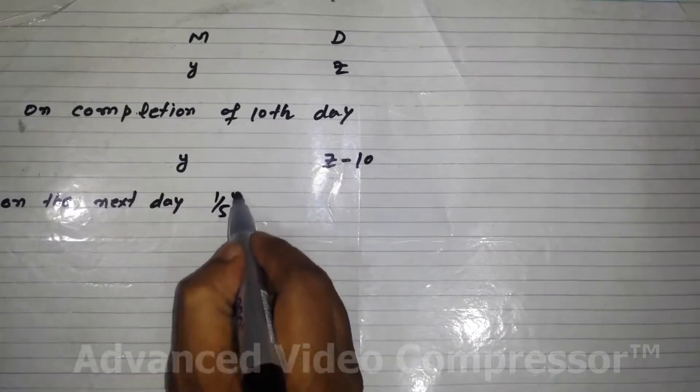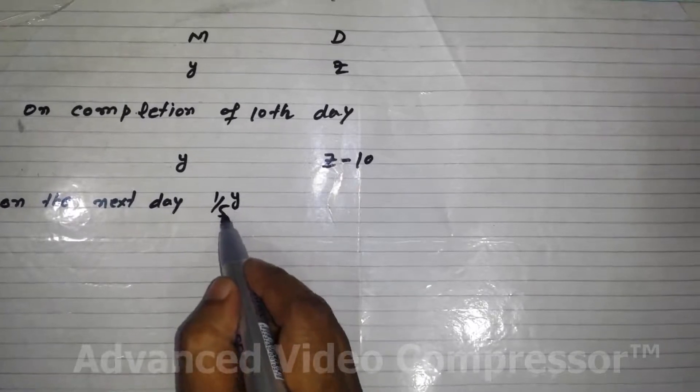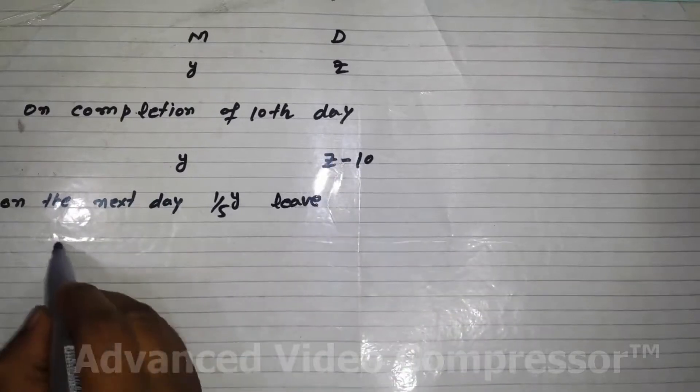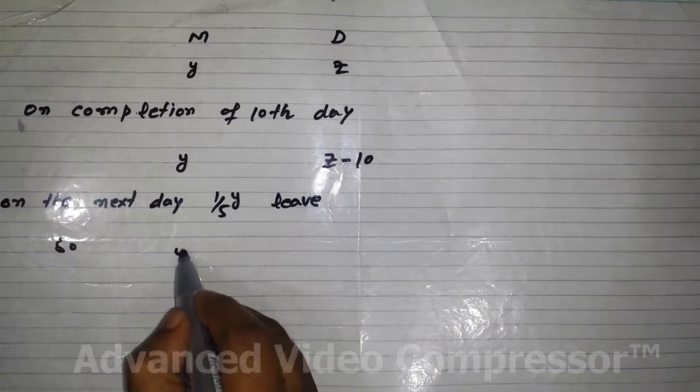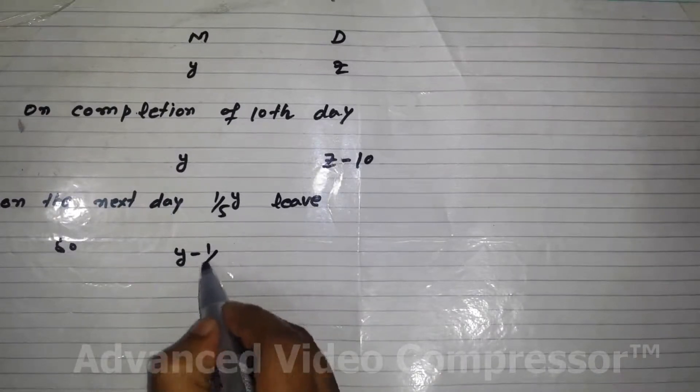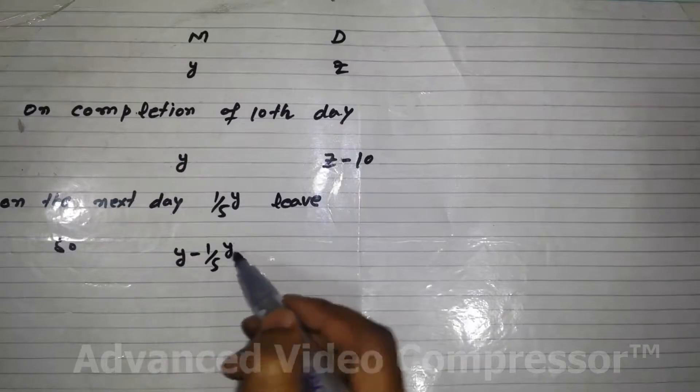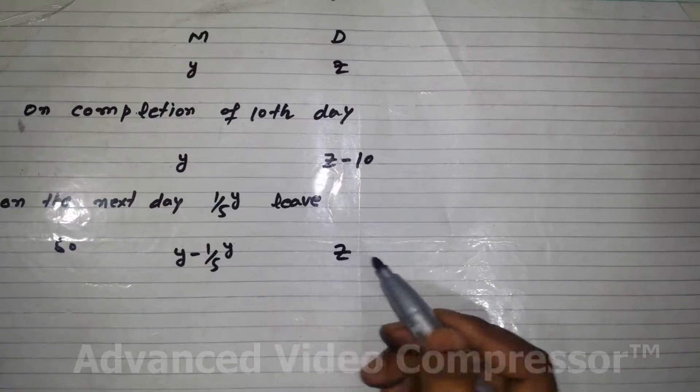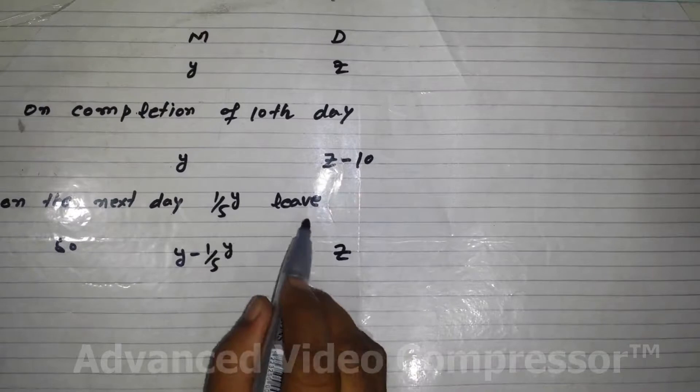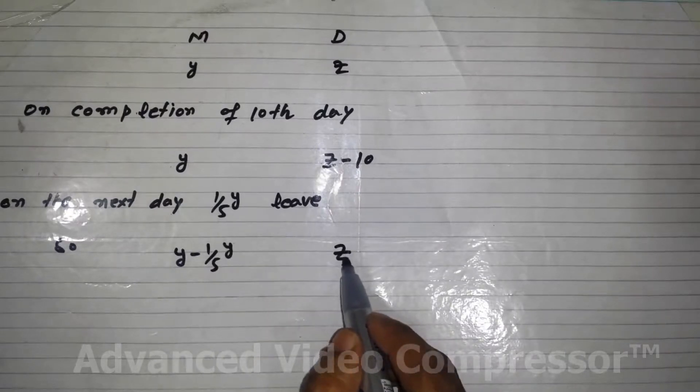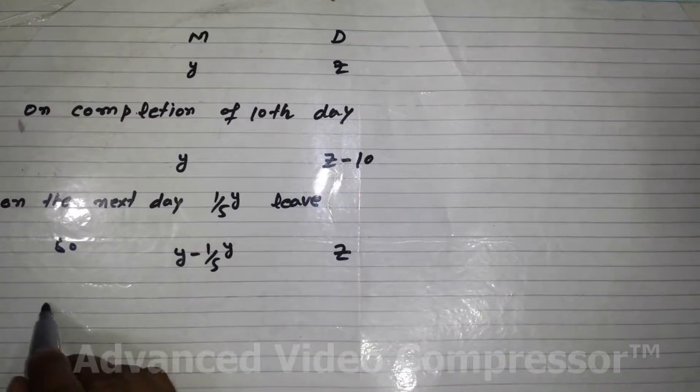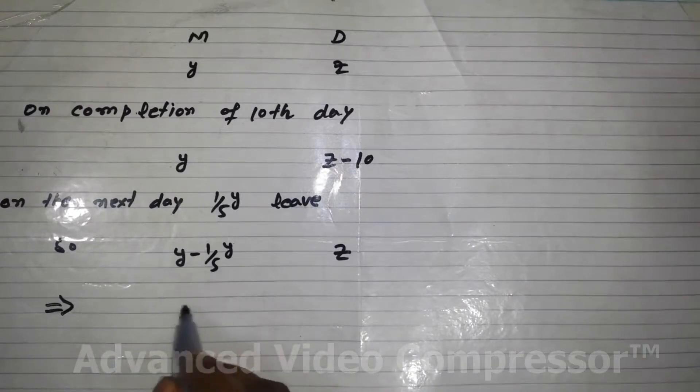Y were the number of men initially. One-fifth of the Y men leave, so now there are Y minus one-fifth Y men, and days are again Z because it has been said in the question that when one-fifth of the men leave, the provision was found to be enough as long as it was before.